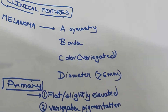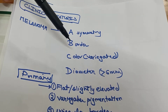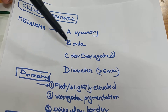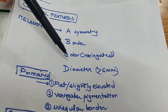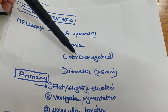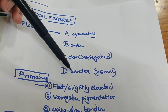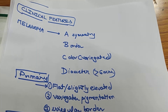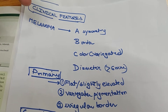For clinical features, in melanoma we use the ABCD rule: A means asymmetry, B means irregular borders, C means color — specifically a variegated color, and D means diameter, which is generally greater than 6 mm in melanoma.